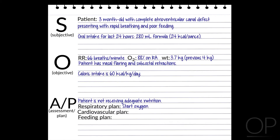The plan is to start nasal cannula oxygen to decrease the respiratory distress and improve oxygen saturations. Elevate the head of the bed 30 degrees. Start diuretics to remove excess lung fluid. Monitor daily weights for fluid balance and nutritional status. Calculate caloric intake and develop a feeding plan to maximize growth and development.